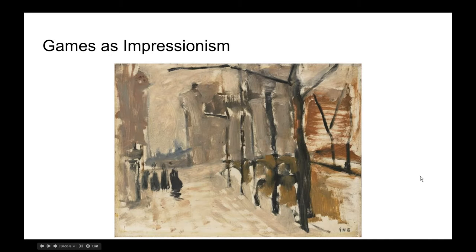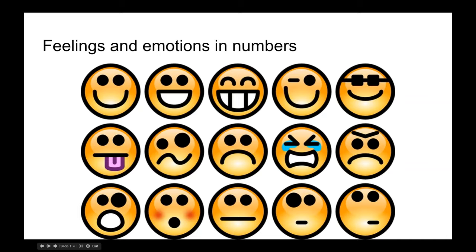Think of an impressionist painting — a minimalist street view where just a couple of streaks of paint represent people, buildings, a road. We understand the scene from just a few smudges. Video game systems compared to real life are similarly simplified. The true complexities of life are never close to fully represented. As systems designers, we take a real or even fictional world and decide what impressions we want to give of it.